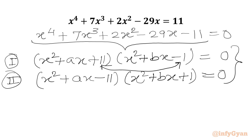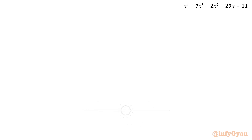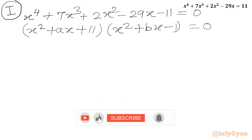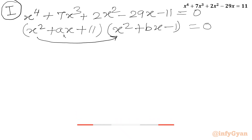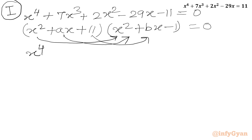Let us begin with Case 1. Here we will multiply both the brackets first. Let us multiply x² with all three terms of bracket 2: x⁴, then bx³, then -x². Then ax with all three terms of bracket 2.